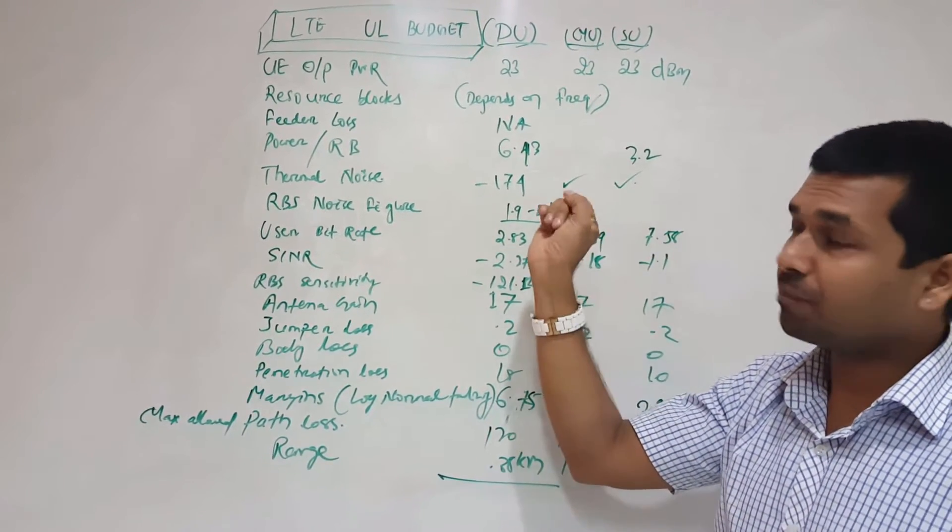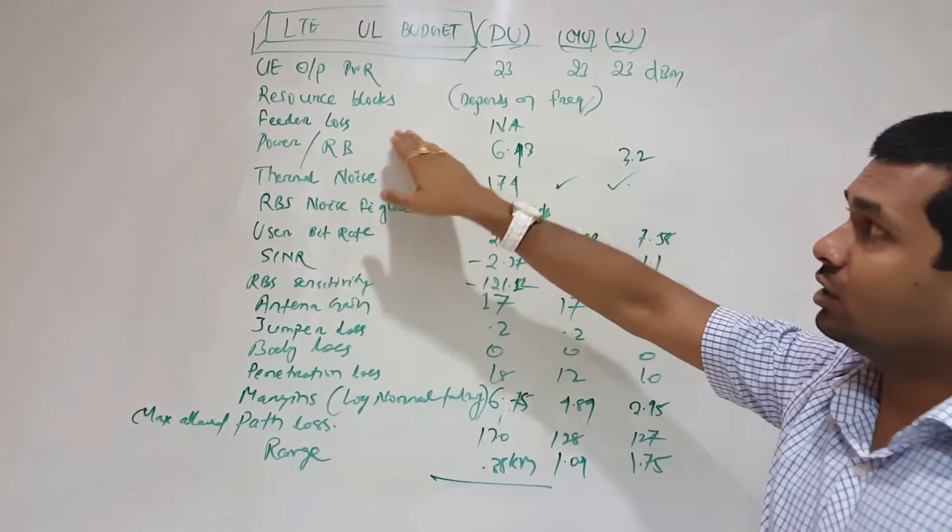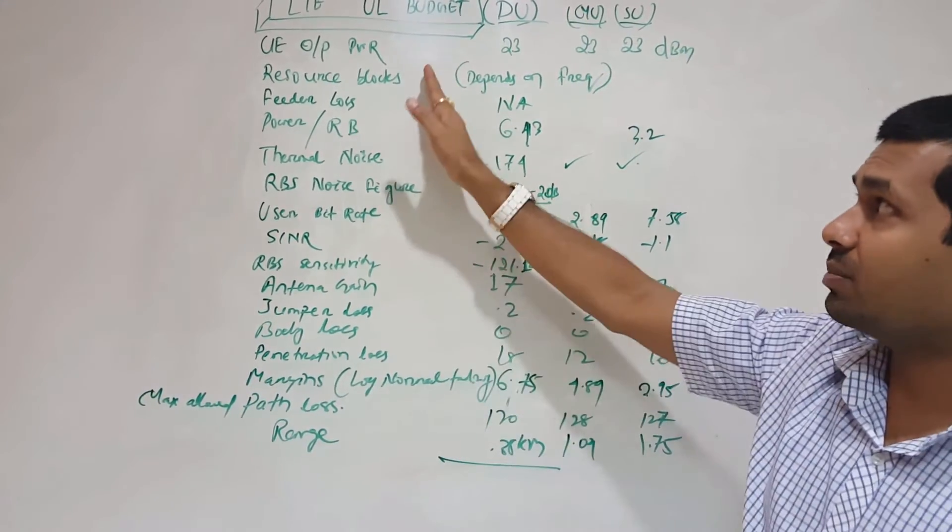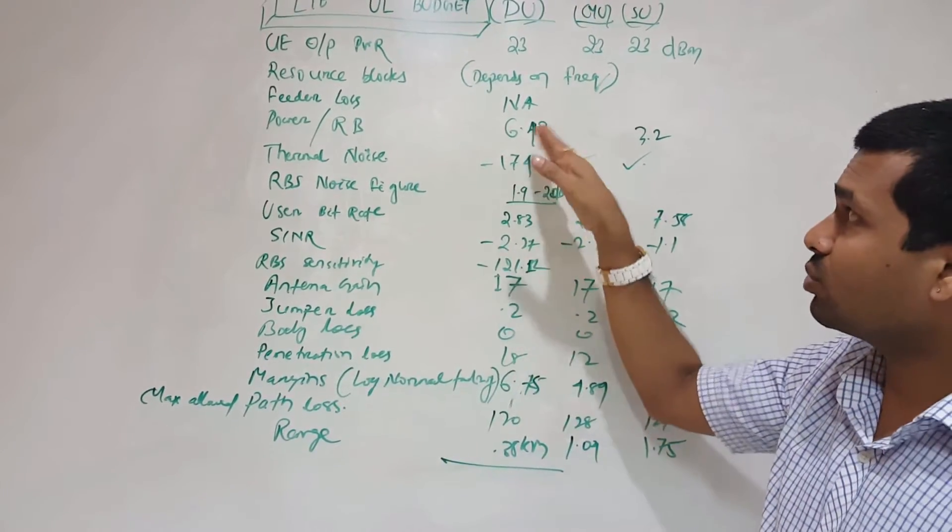Feeder loss - not applicable, no feeders on the UE side. This is uplink budget. Power per resource block is 6.43. Again, it depends on what kind of frequency and how many resource blocks we are using. So basically 6.43, I have taken as a case.